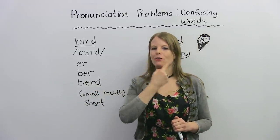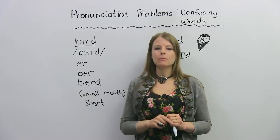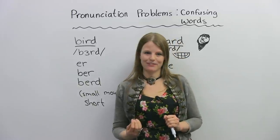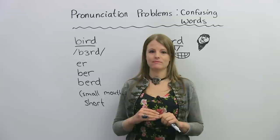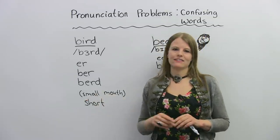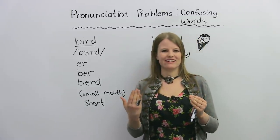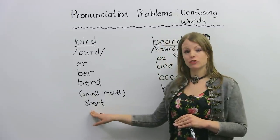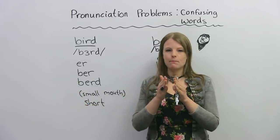Now I want you to really look at my mouth. Am I smiling when I say this word? Bird. No, I'm not smiling. You do not smile when you say the word bird. You have a very small mouth, in fact. Bird. It's kind of serious looking. The sound is also very short — not drawn out. It's short: bird.